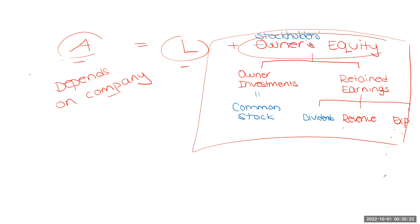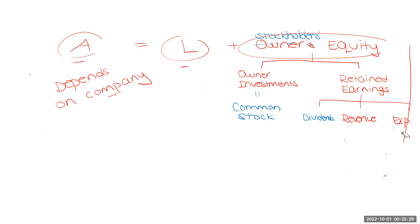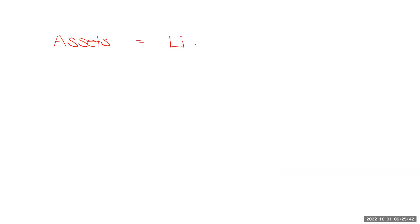Sure, the individual expenses might be different, the individual revenue, but they're still going to have some sort of revenue, some sort of expense, dividends, common stock. So the easiest way to do this will be to look at an example. Let's say that we're going to open up our very own business — our first business. We're just a young little whippersnapper and we decide to start a lemonade stand.